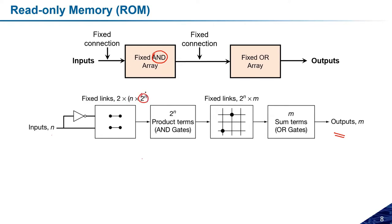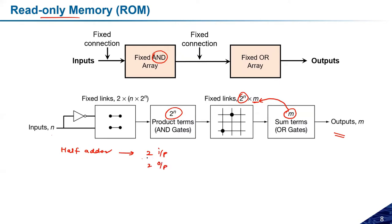For the OR structure, the number of fixed links is 2^n × m, where 2^n represents the product terms and m is the number of outputs. Let's take an example: implement a half adder. In a half adder we have two inputs, so n = 2. On the AND side, the number of fixed links will be 2 × n × 2^n.